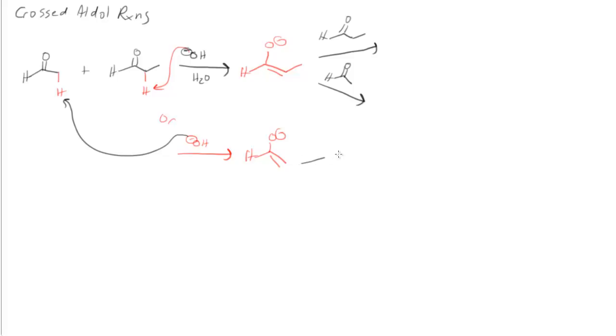And the same is going to be true for the enolate of the acetaldehyde. That can react with a molecule of the propanel or it can react with another molecule of acetaldehyde. So here's your chance to get some practice. Try drawing out the products for all four of these mechanisms and then come back and see how you did.